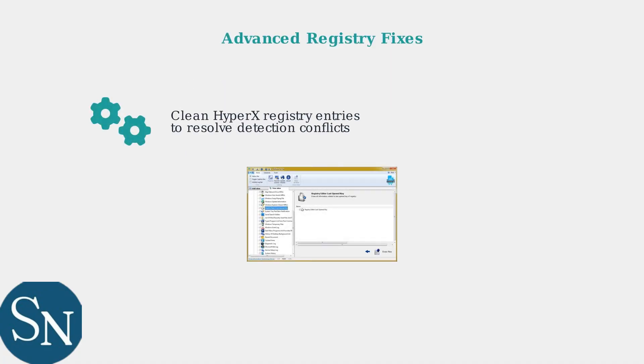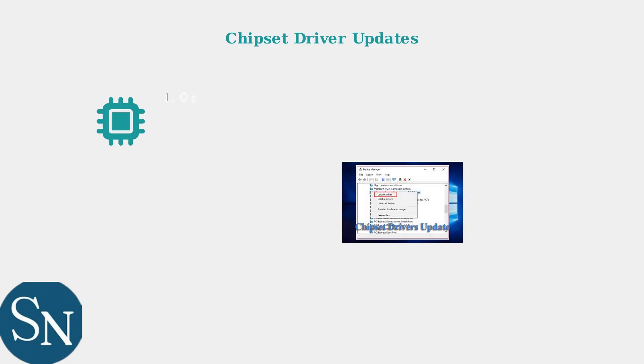When basic troubleshooting fails, advanced techniques can resolve persistent Ingenuity detection issues. Registry modifications are often necessary to clean corrupted HyperX-related data from your system. Updating motherboard chipset drivers is also crucial for proper USB communication, as outdated chipset drivers are a common cause of peripheral detection failures that many users overlook.